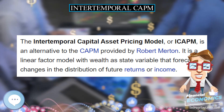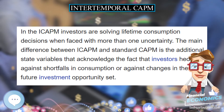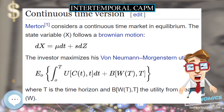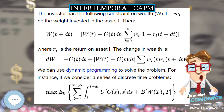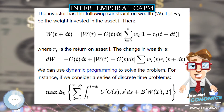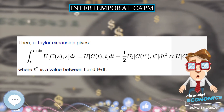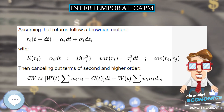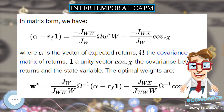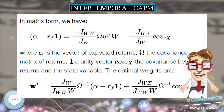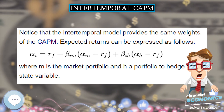Where R_F is the risk-free return. The first order conditions are expressed in matrix form, where alpha is the vector of expected returns, omega is the covariance matrix of returns, one is a unity vector, and cov_rx is the covariance between returns and the state variable.